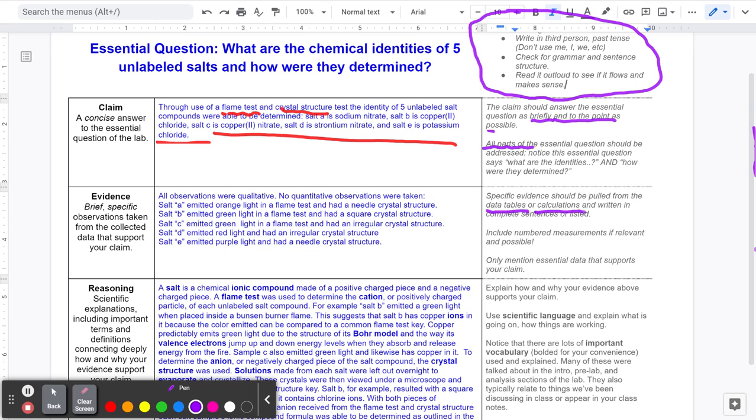It should include numbered measurements when possible. Now, in this evidence here, you'll notice that they made a little kind of statement at the very beginning. It says all observations were qualitative, meaning that they didn't really have any measurements that they made. They were mostly just viewing things and looking and observing with their senses. There was no quantitative observations here.